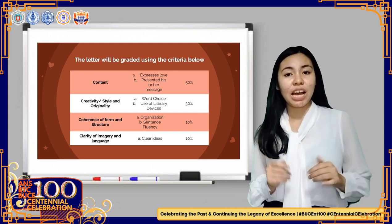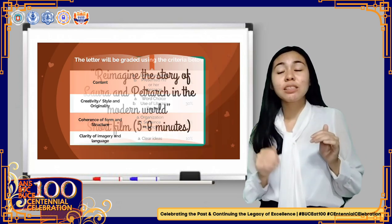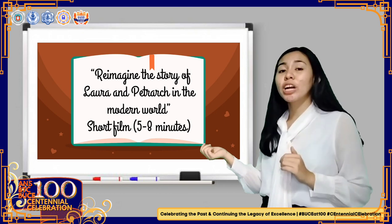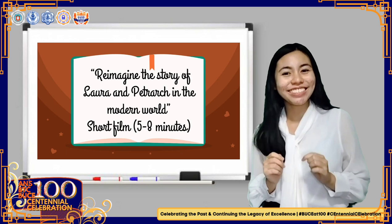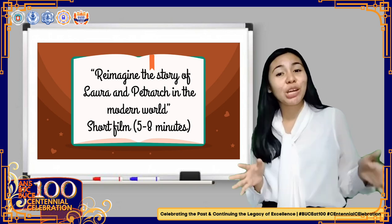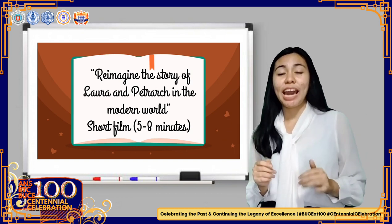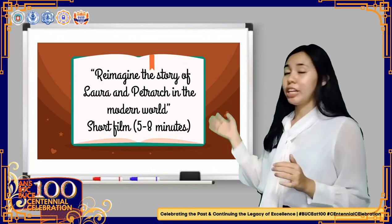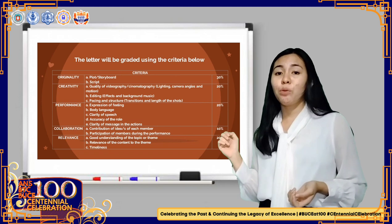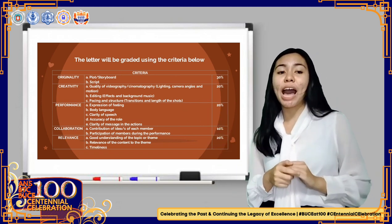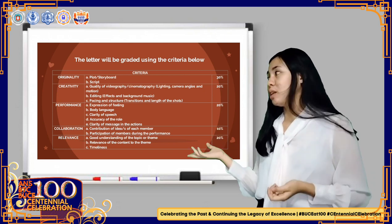Please pass your outputs. Now let's have a group activity. I will divide the class into five groups, and each group must reimagine the story of Laura and Petrarch in the modern world by creating a short skit. The skit should be five to eight minutes. You will be graded using this criteria: originality is 30%, creativity is 20%, performance is 20%, collaboration is 10%, and relevance is 20%.